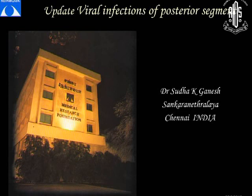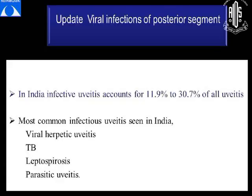Coming to the update on viral infections in India, the infectious uveitis accounts for about 11 to 30% of all cases of uveitis, and the most common infectious causes are the viral herpetic uveitis, tuberculosis, leptospirosis, and the parasitic uveitis.